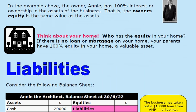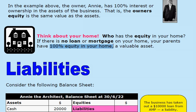However, think about your home. Who has equity in your home? If there is no loan or mortgage on your home — a mortgage is a type of loan — your parents have 100% equity in your home, which is obviously a valuable asset. If your parents do not have a loan, do not have a mortgage, they have 100% equity in your home. We will look at the situation when that is not the case in a moment.